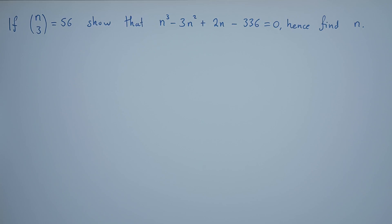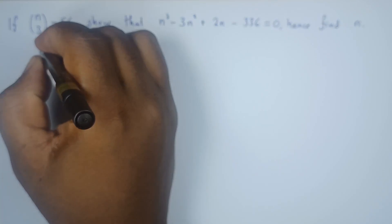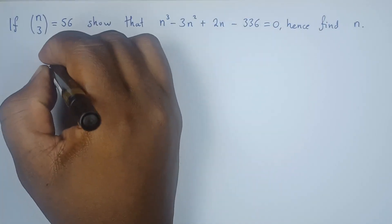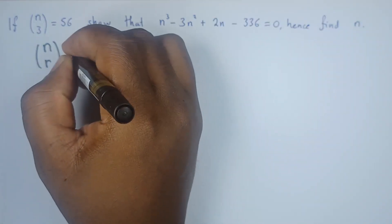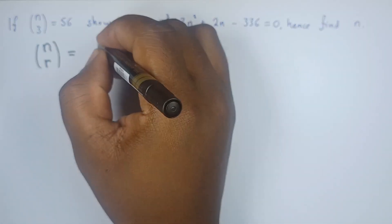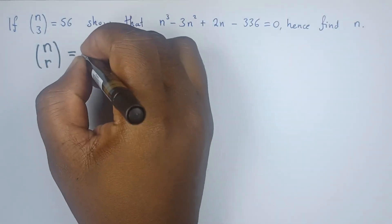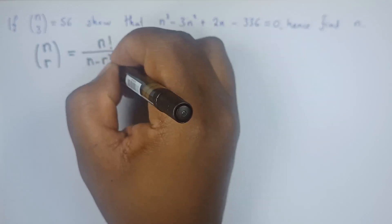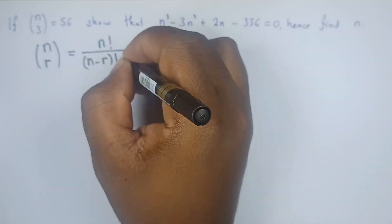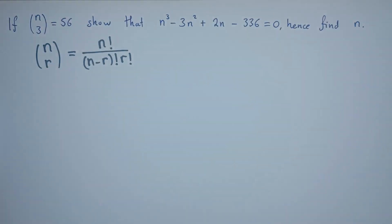So the first thing we have to remember is a combination. For example, n choose R is found by n factorial divided by (n-R) factorial times R factorial. So that's the formula for a combination.